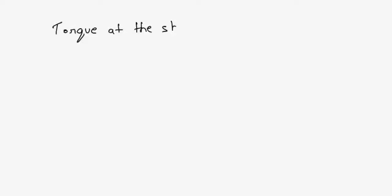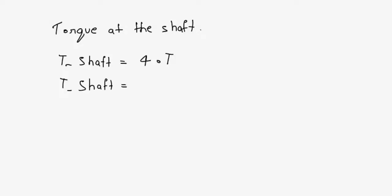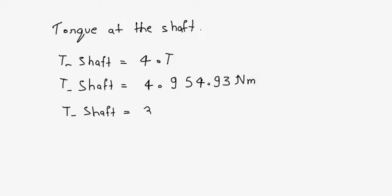We can now calculate the torque at the shaft. Since the power is transmitted through a 4-to-1 gearing ratio, the torque at the shaft will be 4 times the engine torque. Torque at shaft equals 4 multiplied by 954.93 Nm, so torque at shaft equals 3819.72 Nm.